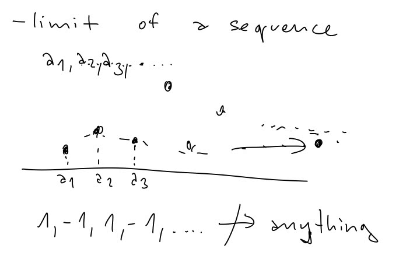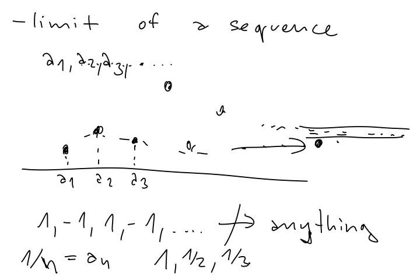For example, take 1 over n. So an is equal to this quantity. So this sequence starts as 1, 1 half, 1 third, 1 over 4, 1 over 5, and so on. This is decreasing all the time and it's going to 0. So if I draw a picture, the sequence looks like this. As you can see, it's going closer and closer to the 0.